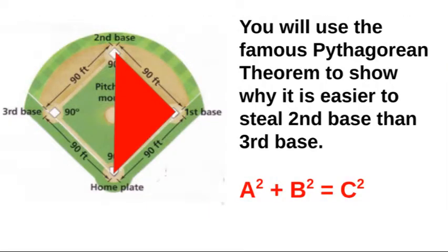Another topic, and one of my favorites, is working with the Pythagorean theorem. One example is we'll show you how to use the Pythagorean theorem to prove why it's easier for a baseball player to steal second base than it is to steal third base. I bet your parents all know what the Pythagorean theorem is — a squared plus b squared equals c squared — and by the end of the year that will make total sense.